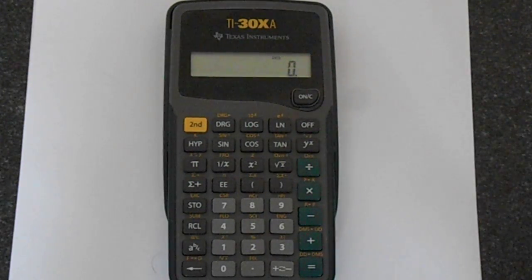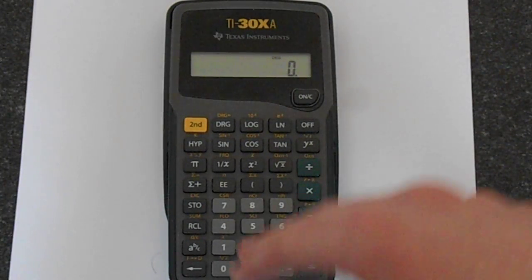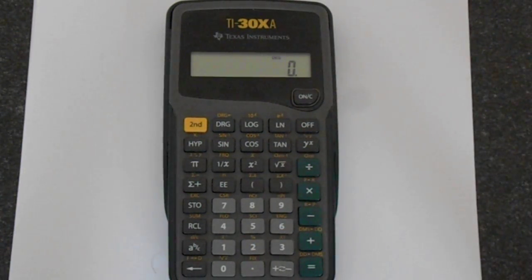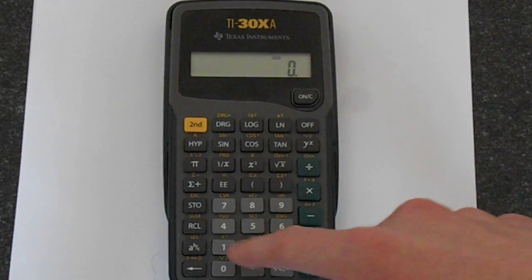Okay, on to exponentials. If you want to find the exponential of something, you just type in the number and then the exponential function. So the number always comes first when you're doing the powers.